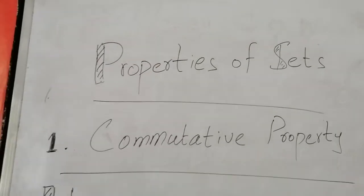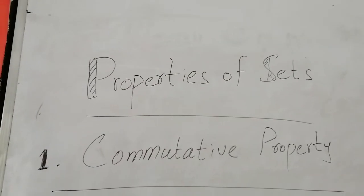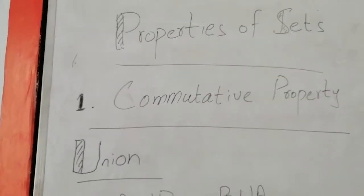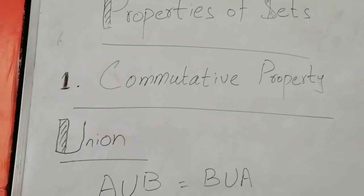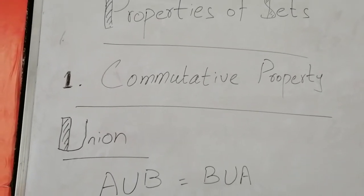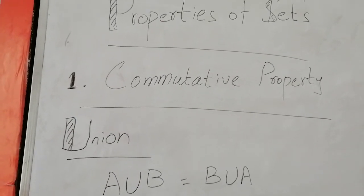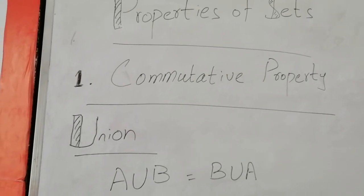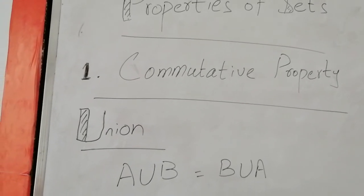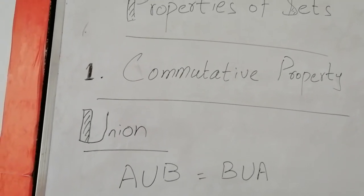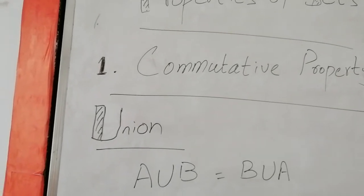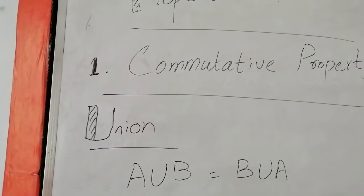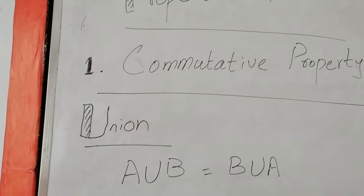The first property is the commutative property, which we will discuss for both union and intersection. For union, A union B is equal to B union A. The commutative property means that if you change the order of sets — whether you write A union B or B union A — there is no difference.